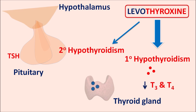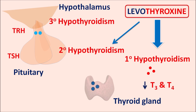When there is a deficiency at the level of the hypothalamus, it can lead to tertiary hypothyroidism. The hypothalamus releases TRH (thyrotropin releasing hormone), which activates the pituitary to release TSH, which then activates the thyroid gland. Insufficient TRH leads to decreased thyroid hormone release. In such conditions, levothyroxine can be given as a thyroid supplement. So whatever the reason — primary, secondary, or tertiary hypothyroidism — levothyroxine can be given to control the symptoms.